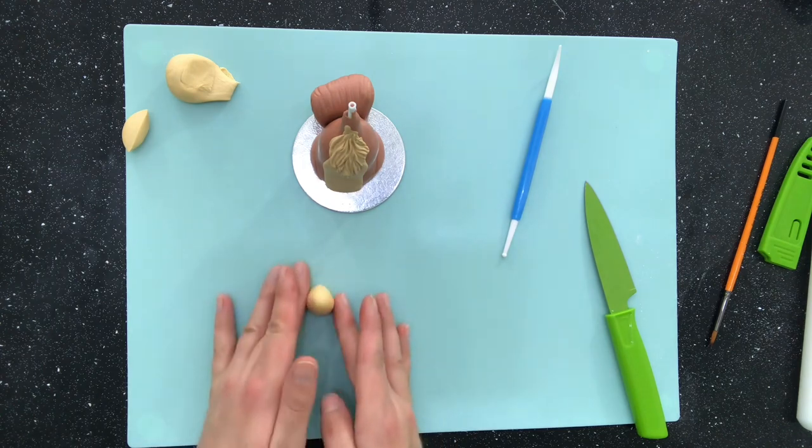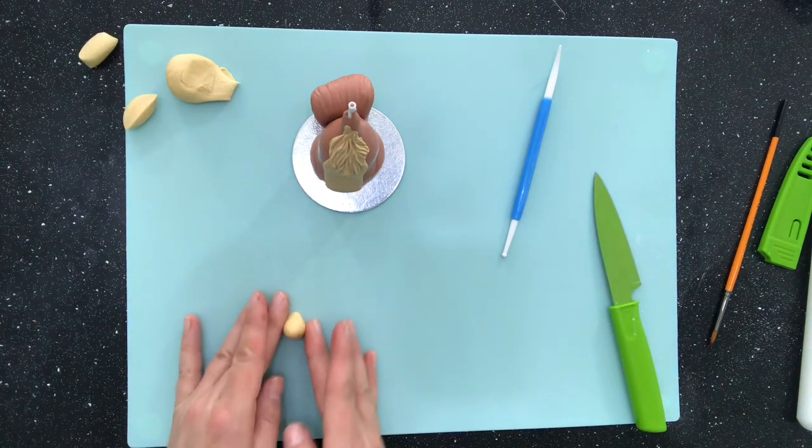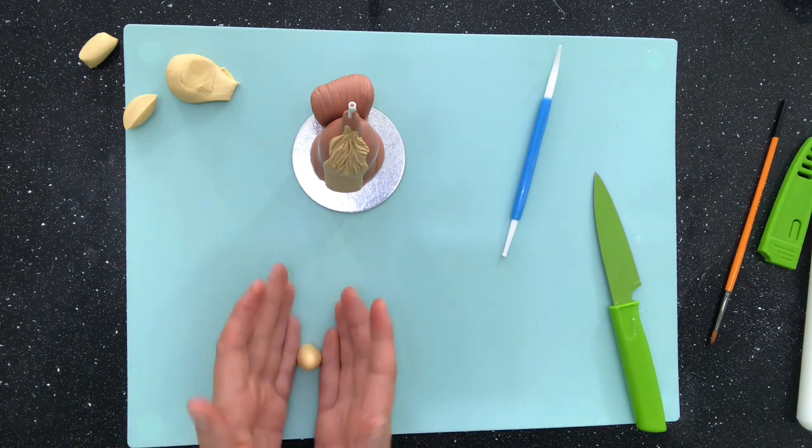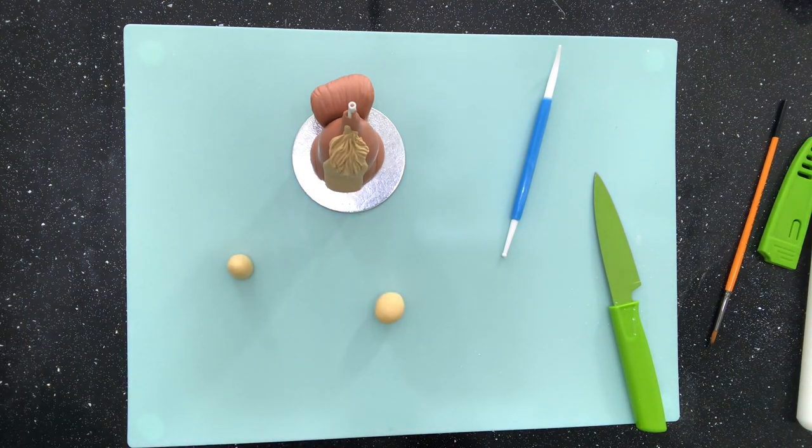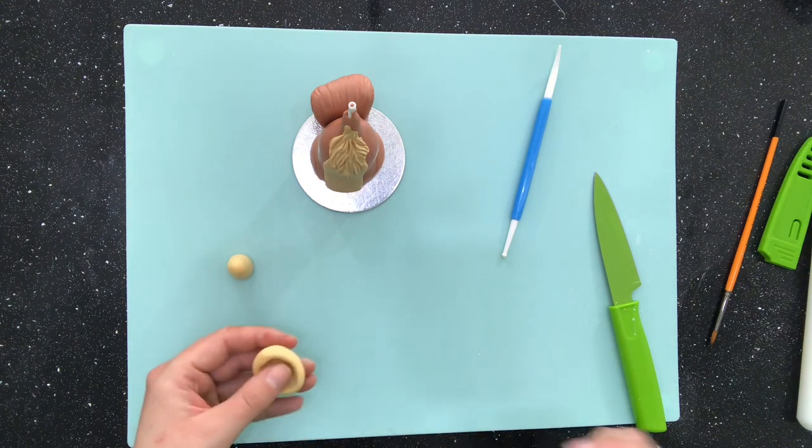I wanted my squirrel to have an acorn so I take some caramel ivory colour modelling paste and create almost a cone. Then I take another piece and push my bowling tool into it to create like a hat for the flat end of the cone.